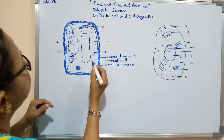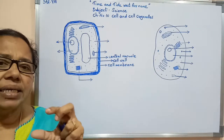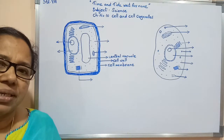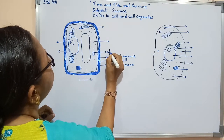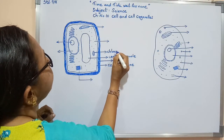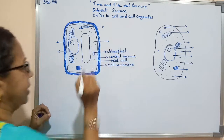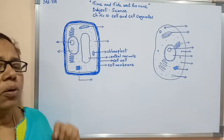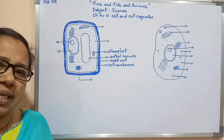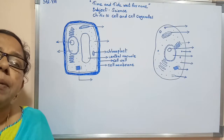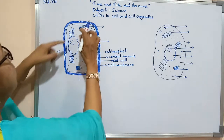In the case of the plant cell, green colored small bags are present. Those bags are known as chloroplast. Inside the chloroplast, chlorophyll is present. With the help of this chloroplast and the chlorophyll inside it, plants can prepare their own food materials.